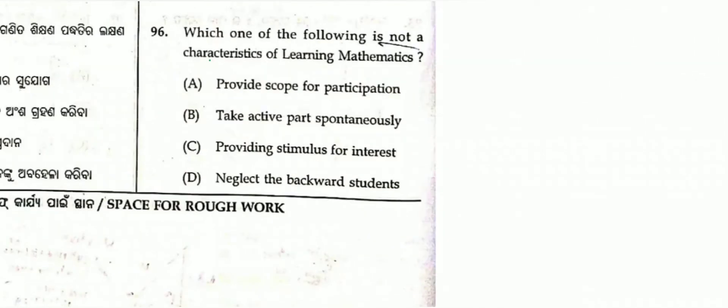Question number 96: Which one of the following is not a characteristic of learning mathematics? The options include: provide scope for participation, take active parts spontaneously, providing stimulus for interest — all of which are characteristics. Option D, to neglect the backward students, is not a characteristic. Option D is correct.